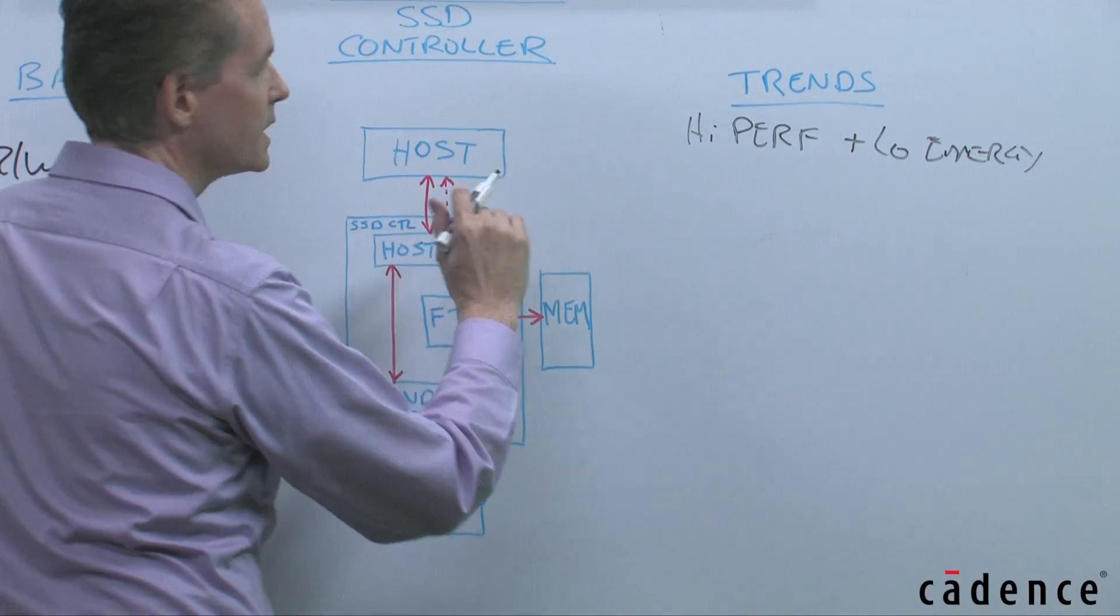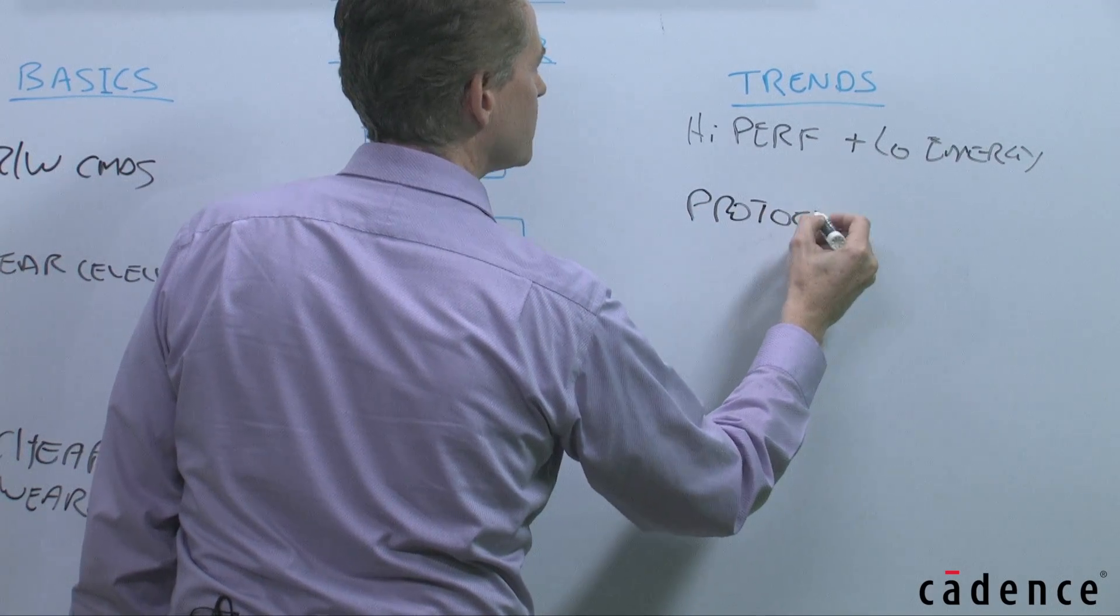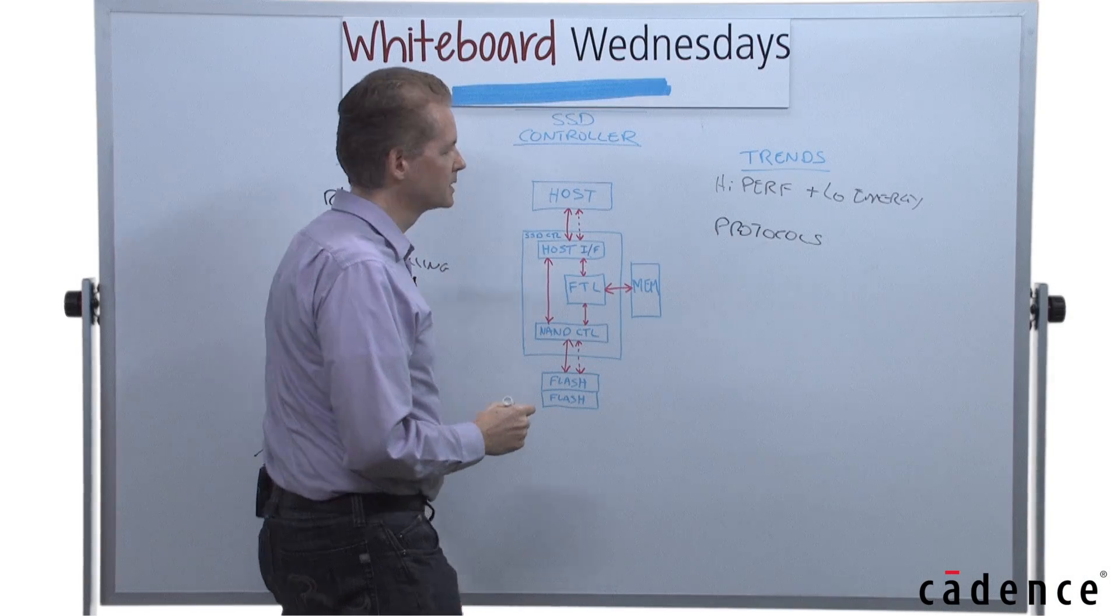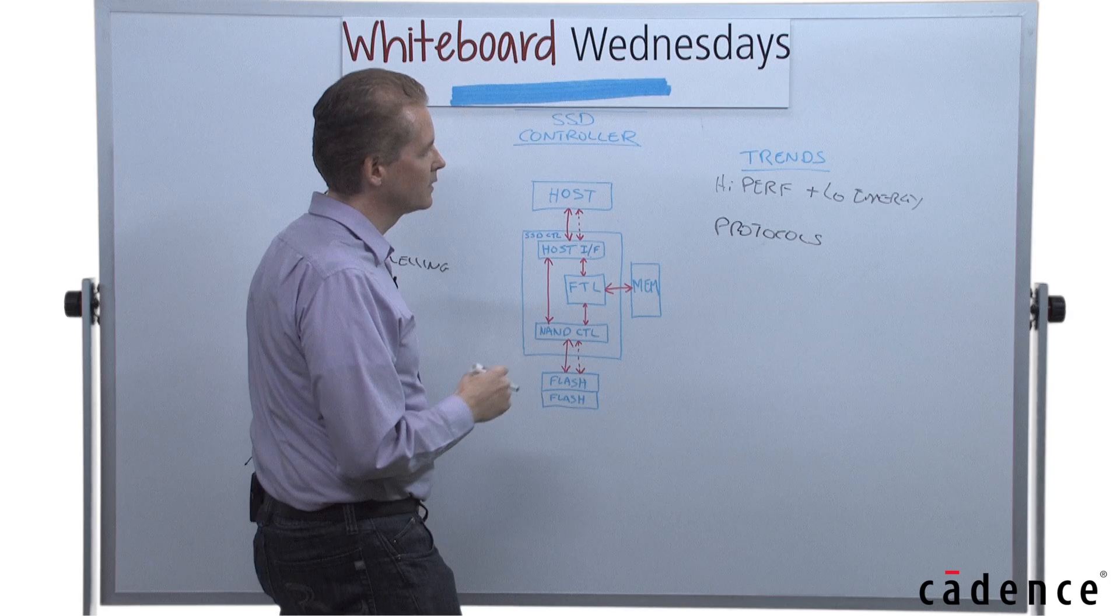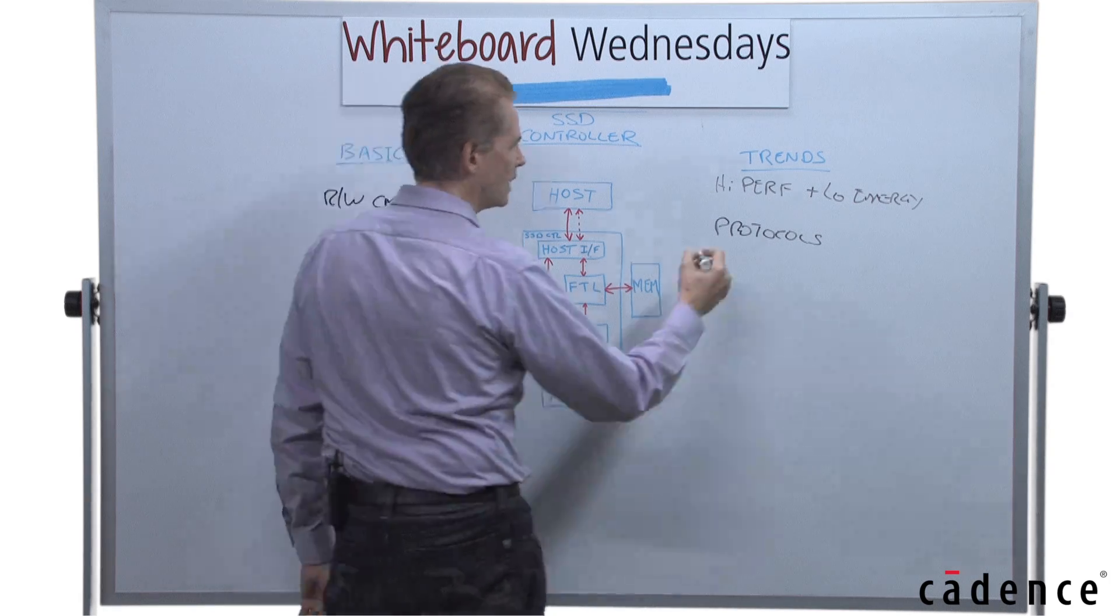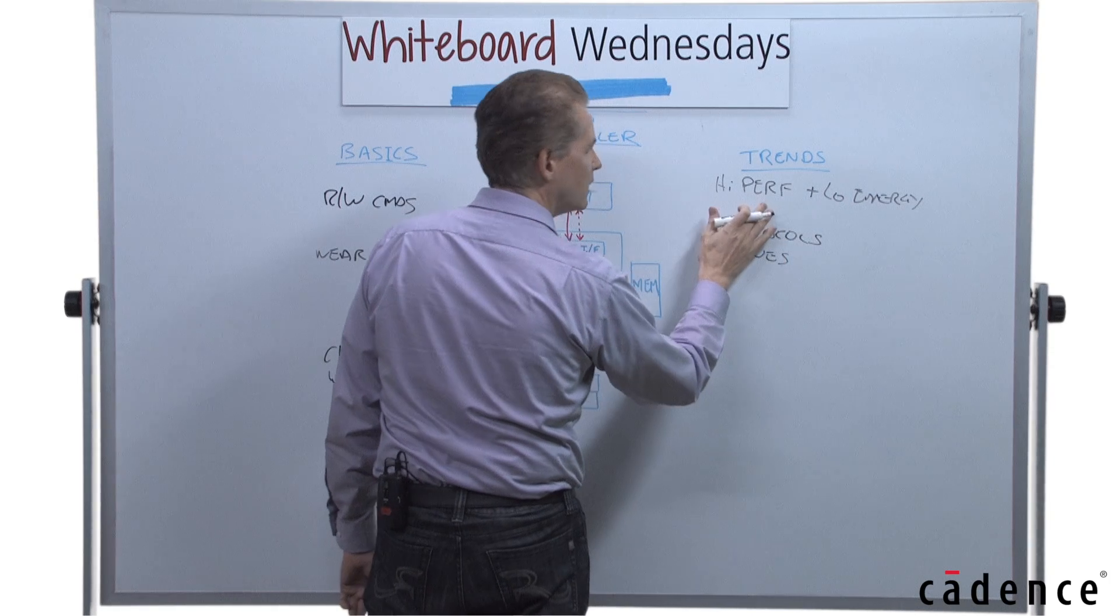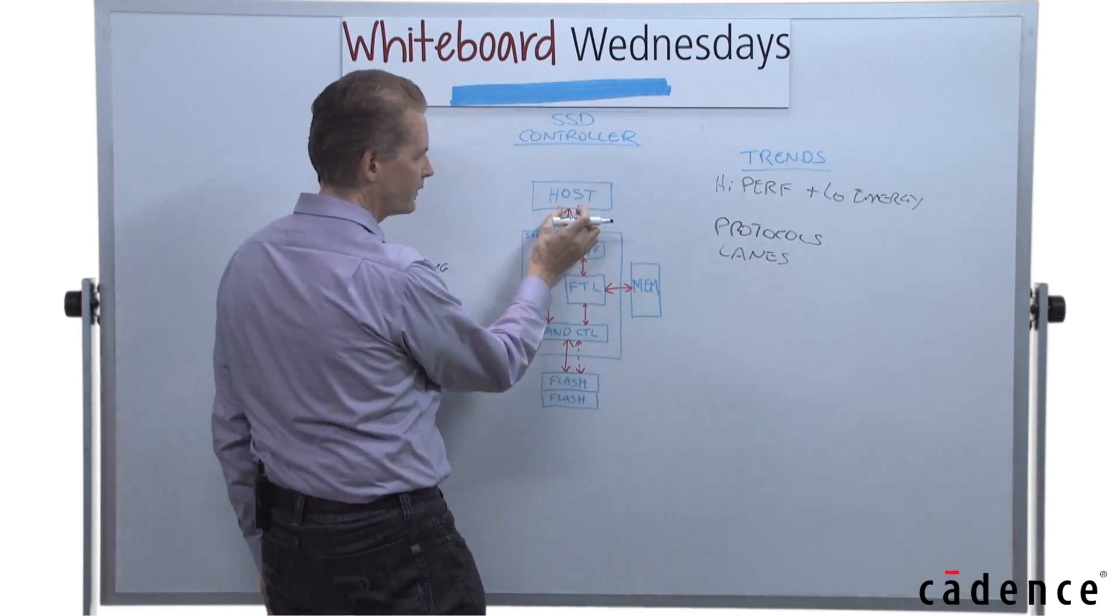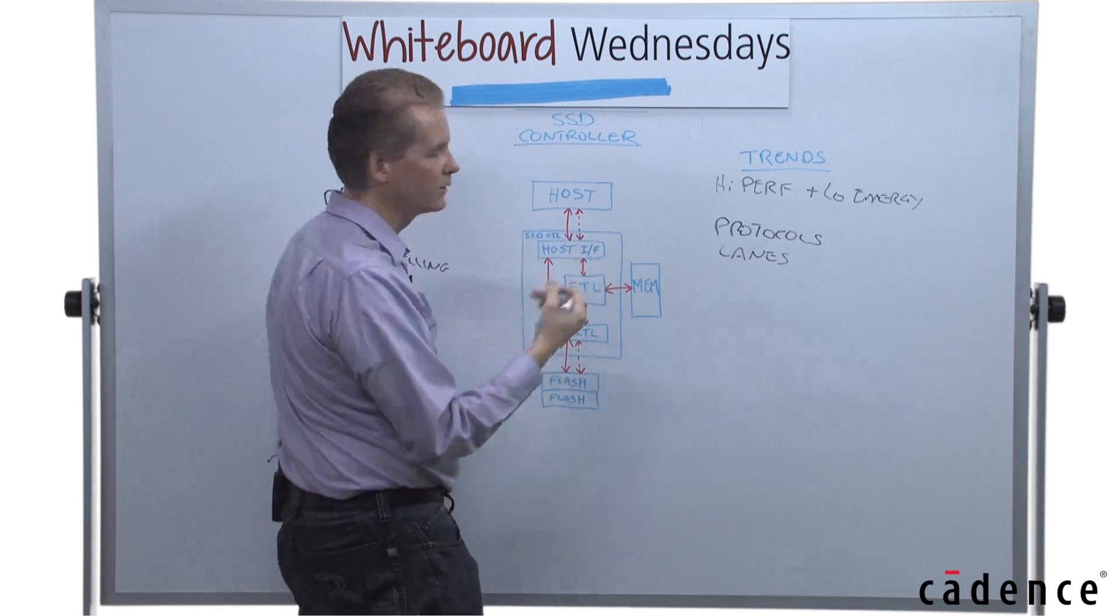On the host side, one of the things it's having to deal with these days is multiple protocols. We have NVMe today as the most modern standard, and previously SATA and other protocols. In addition to that, multiple lanes. To get high performance, we're looking at having multiple data streams going in and out of the host to get a higher level of parallelism.